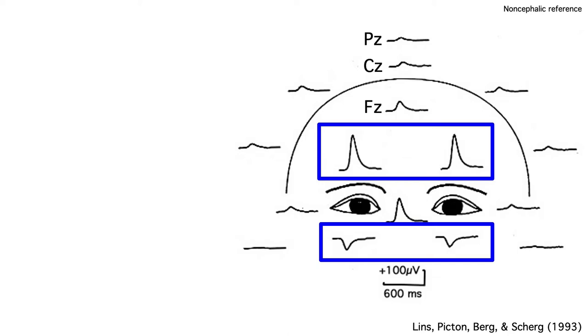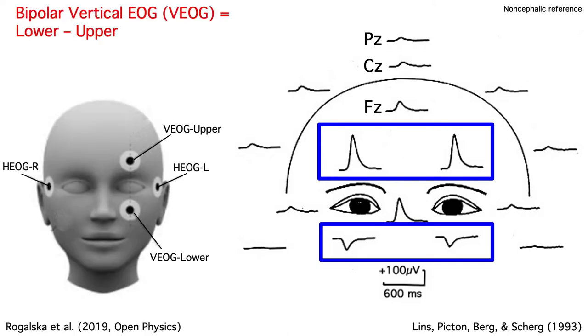Researchers often take advantage of this by computing a bipolar vertical EOG signal, which is lower minus upper. A negative minus a positive is a bigger negative, so the bipolar VEOG allows us to see the blink even better.